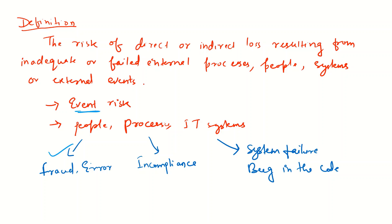Then you have processes. You could be in non-compliance with the different processes, in non-compliance with the different regulations. That is also some kind of operational risk because you are in breach of the regulations.